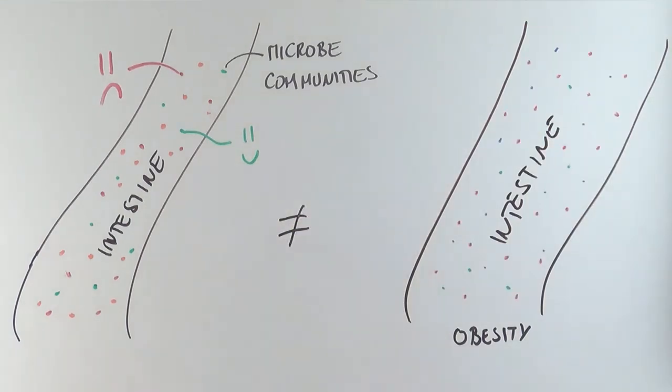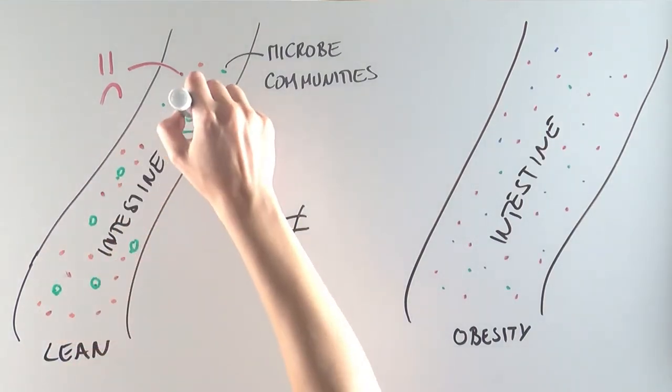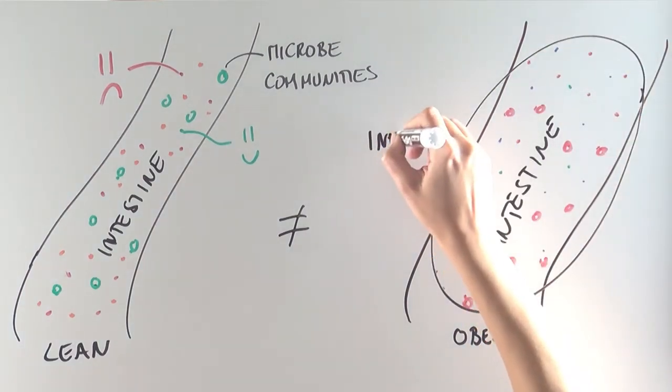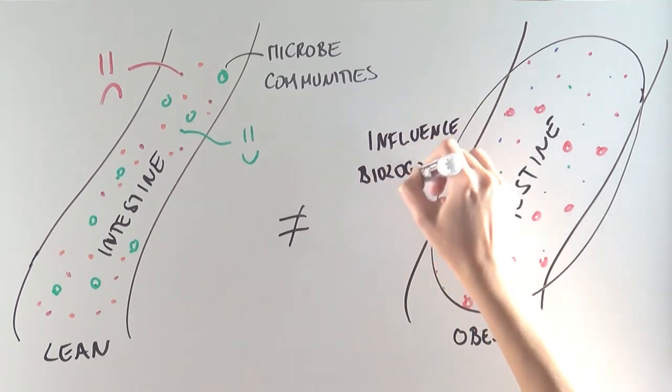The scientists found that obesity can greatly influence the types of bacteria that live in our intestine. Let's say, for example, that obese mice have more red bacteria in their intestine than lean mice that have more green bacteria. So they wondered if the different bacterial communities in obese versus lean mice could influence biology in the liver and explain the fact that obesity promotes liver cancer.